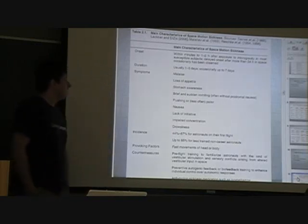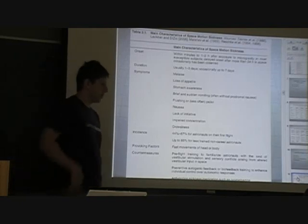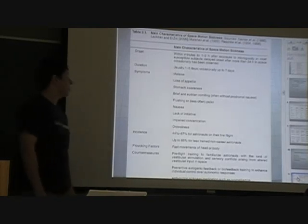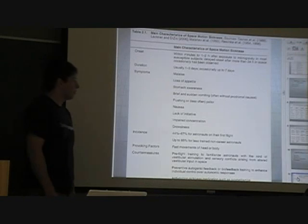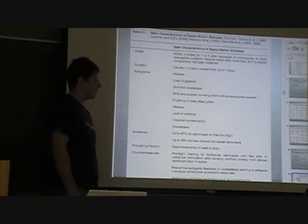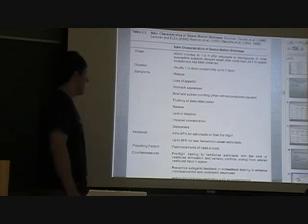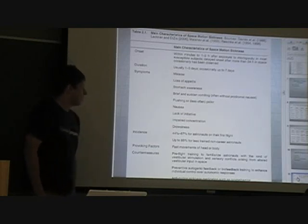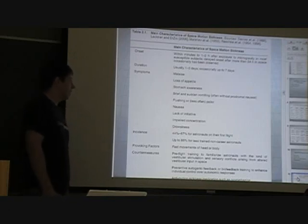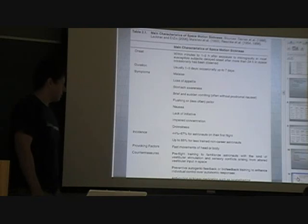The symptoms are malaise, lost appetite, stomach awareness, in case you're just very aware of your stomach. Brief and sudden vomiting, often without prodromal nausea, so it's like you're unaware that you're going to vomit, and then it's all over the place. Flushing, or less often pallor, so changes in skin color, nausea, lack of initiative, impaired concentration or drowsiness.